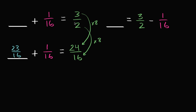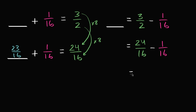If blank plus 1/16 is 3/2, then blank is going to be equal to 3/2 minus 1/16. And we know that 3/2 is the same thing as 24/16. So 24/16 minus 1/16, which we figured out is 23/16.